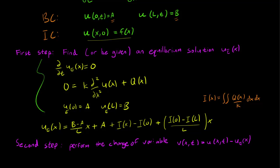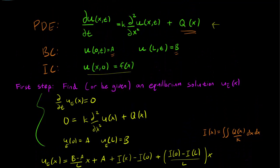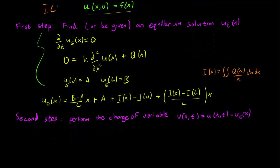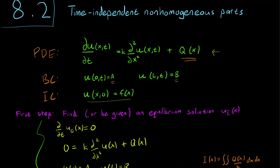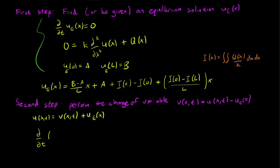The second step is to perform a change of variable: v(x,t) = u(x,t) minus the equilibrium solution. You can see why this helps — it removes all the non-homogeneous parts from our partial differential equation. So v(x,t) = u(x,t) − u_e(x), which means u(x,t) = v(x,t) + u_e(x). Let's substitute all of that into our PDE. We get that the derivative of v(x,t) + u_e(x) equals k times the second derivative of v(x,t) + u_e(x) plus Q(x).